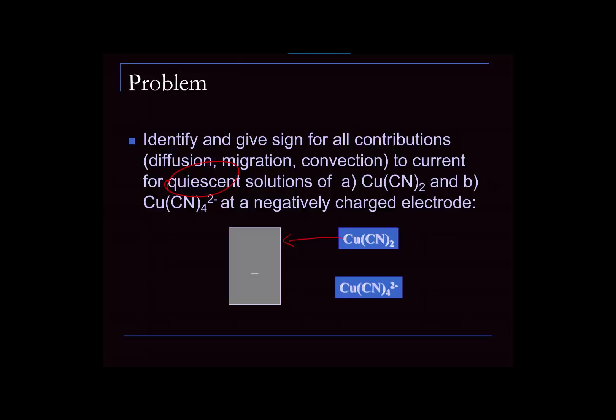Copper tetracyanide dianion is a little different. It will still diffuse to the electrode surface. Will it migrate? Yes — but will it migrate in the direction we'd like? No. It's a dianion, and the electrode as depicted is negatively charged. Opposites attract, same charges repel — so the migration current I_m will be in the opposite sense from the diffusion current I_d, working against us. Will it undergo convection? Again, no — not with a quiescent solution and short reaction times. So copper tetracyanide dianion experiences diffusion towards the electrode but migration away from the electrode.